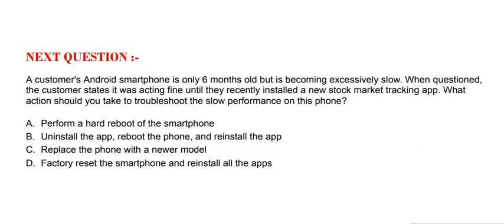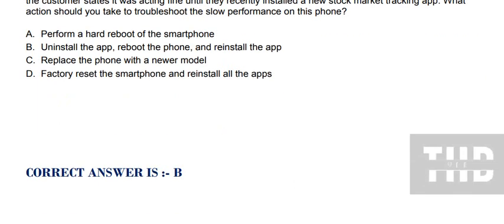Next question: a customer's Android smartphone is only 6 months old but is becoming excessively slow. When questioned, the customer states it was acting fine until they recently installed a new stock market tracking app. What actions should you take to troubleshoot the slow performance on this phone? Option A: perform a hard reboot of the smartphone. Option B: uninstall the app, reboot the phone, and reinstall the app. Option C: replace the phone with a newer model. Option D: factory reset the smartphone and reinstall all the apps. The correct option is Option B.